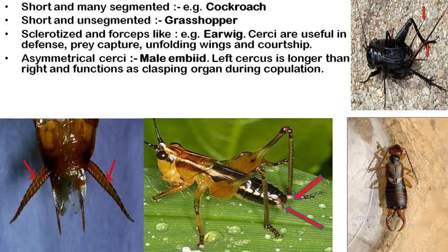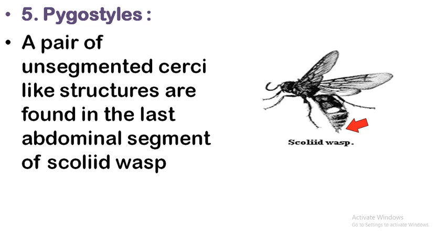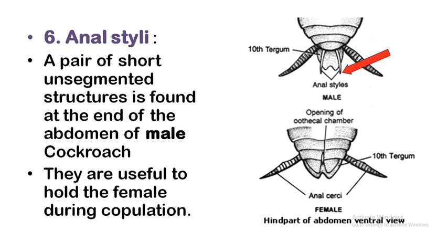In male embiids, the cerci are asymmetrical — the left cercus is longer than the right and functions as a clasping organ during copulation. The median caudal filament is found in mayflies and silverfish; the epiproct is elongated into a cercus-like median caudal filament. Pygostyles are a pair of unsegmented cercus-like structures found in the last abdominal segment of scoliid wasps.